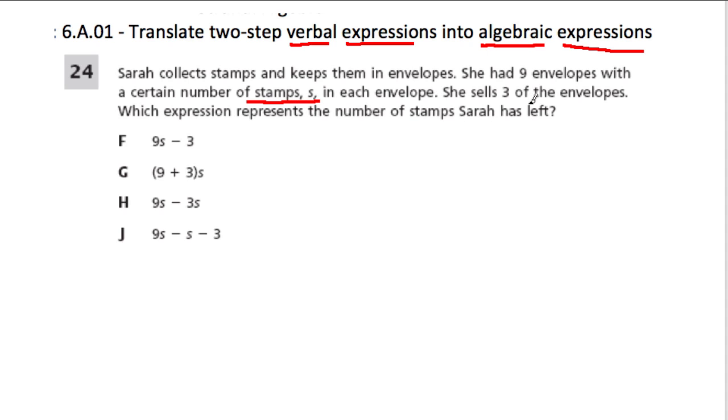She sells three of the envelopes, which expression represents the number of stamps Sarah has left. Okay. A bunch of choices here. Let's just think about this. So she has nine envelopes with a certain number of stamps, and then we take away three envelopes which each contain the same number of stamps. And what do we have left? Well, if we had nine envelopes with some amount of stamps and took three away with some amount of stamps, we have six envelopes with some amount of stamps. So I think the answer is H.